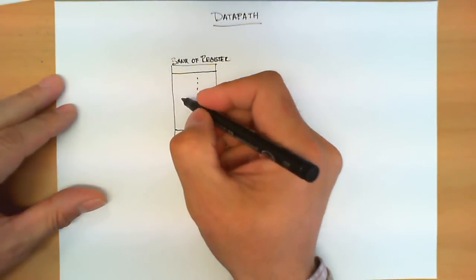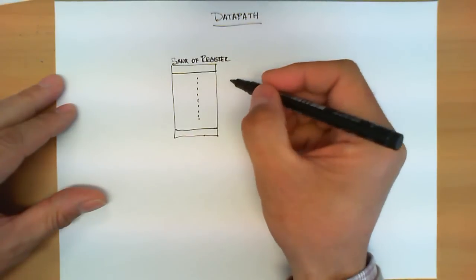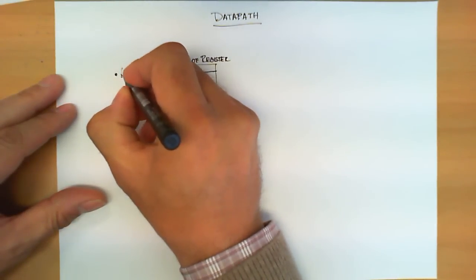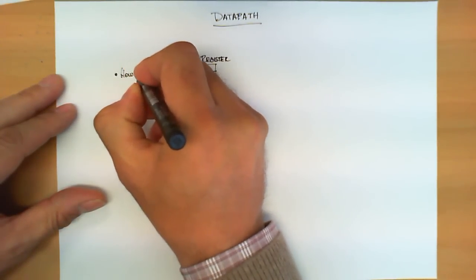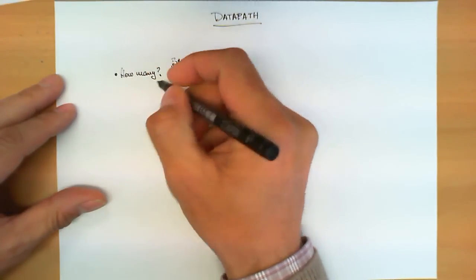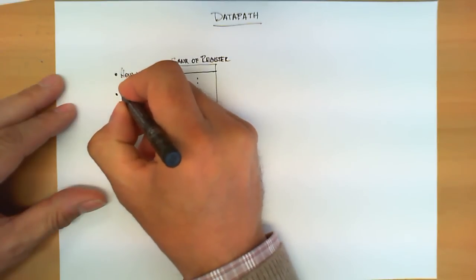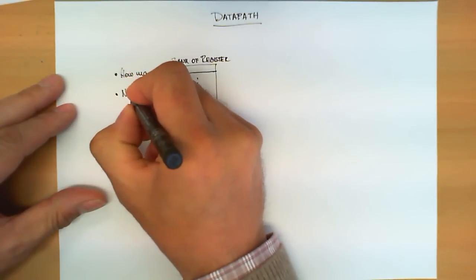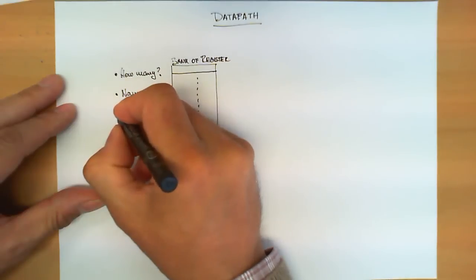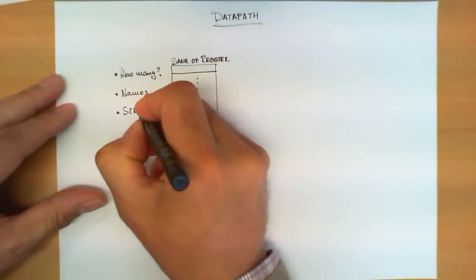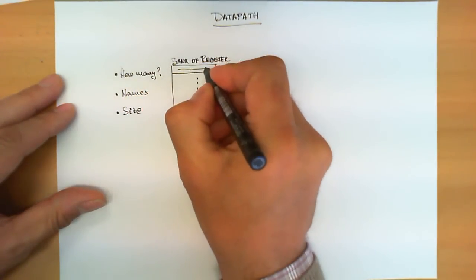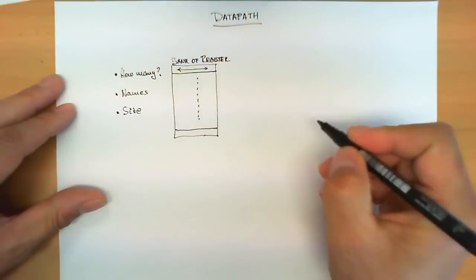There are several parameters that are very important about this bank of registers. One of them is how many of these registers there are. Another, very important, is the names of those registers. And the third one, perhaps the most important, is the size — in other words, how many bits they can store.